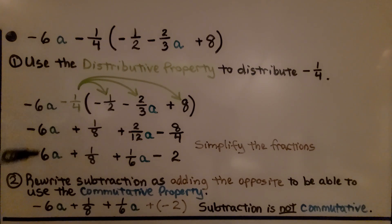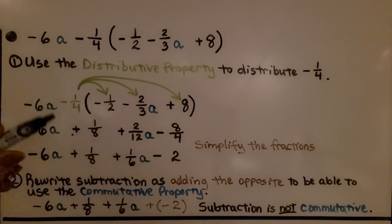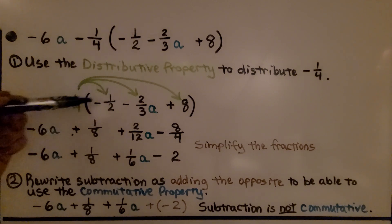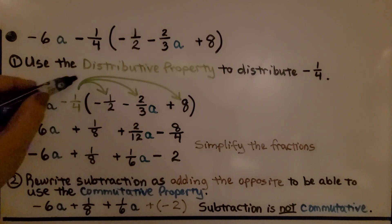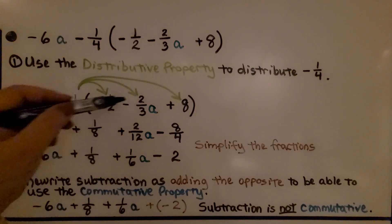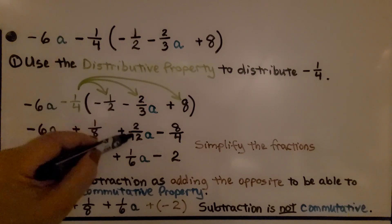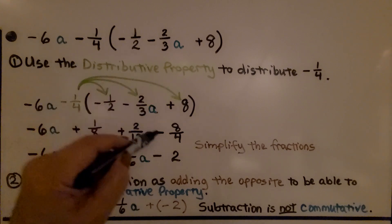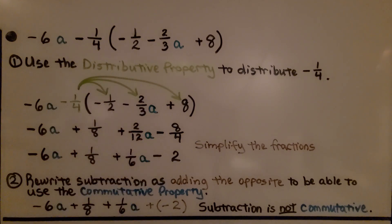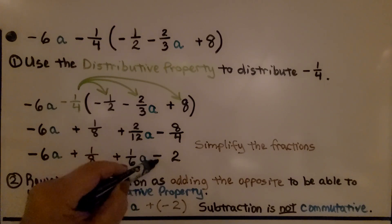The 6a is going to stay constant all the way down. Negative 1/4 times negative 1/2: negative times negative gives a positive, and multiplying straight across gives 1/8. Negative 1/4 times negative 2/3 a: 1 times 2 is 2, 4 times 3 is 12, negative times negative gives positive 2/12 a. Negative 1/4 times positive 8 gives negative 8/4. Simplifying: 2/12 a is 1/6 a, and 8/4 is 2, so we have minus 2.